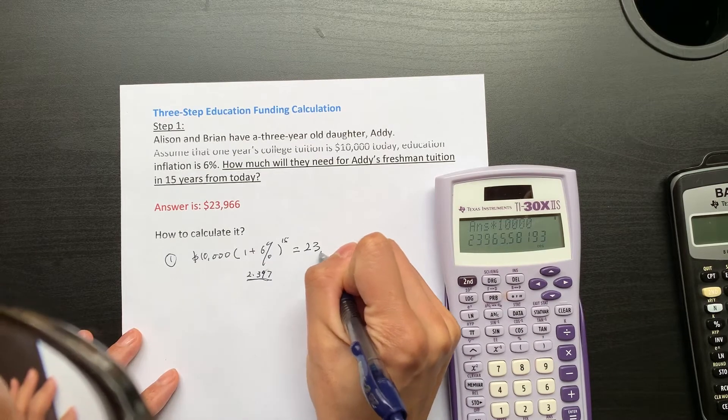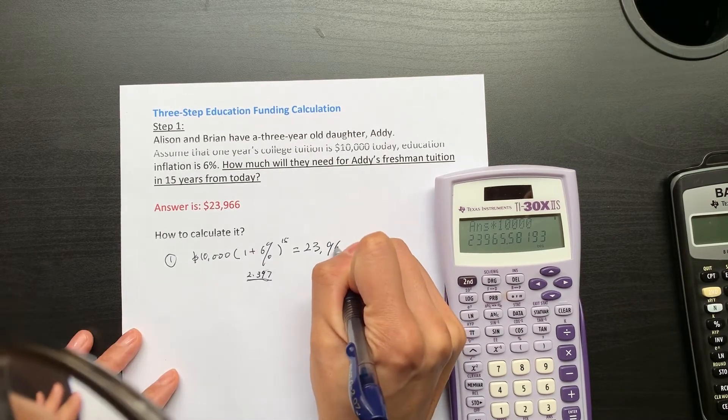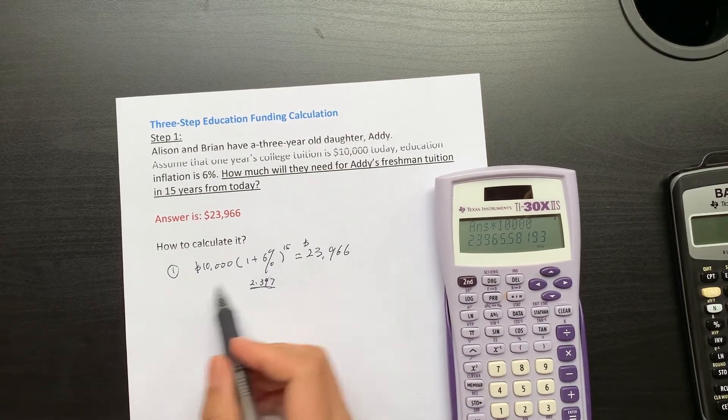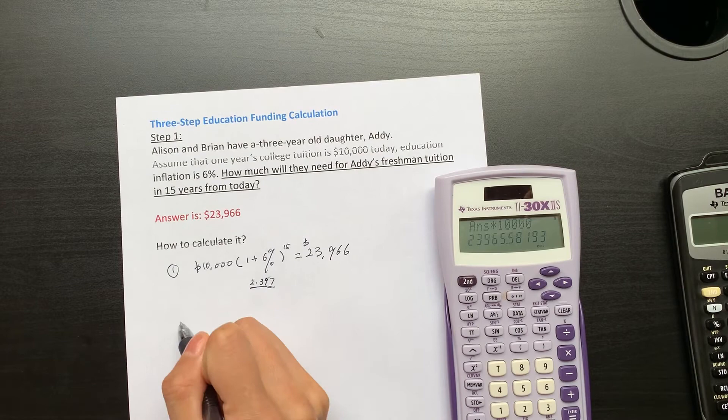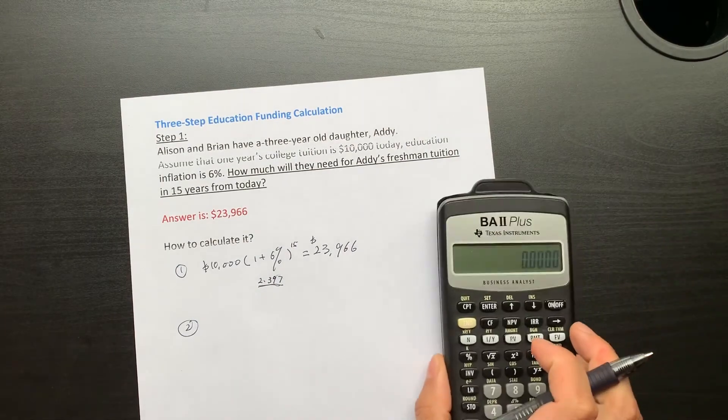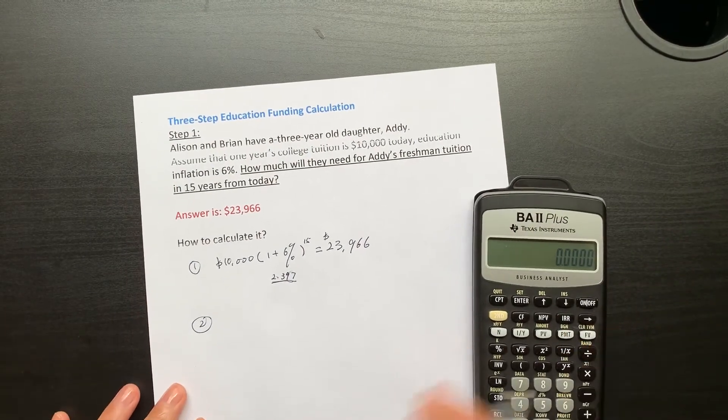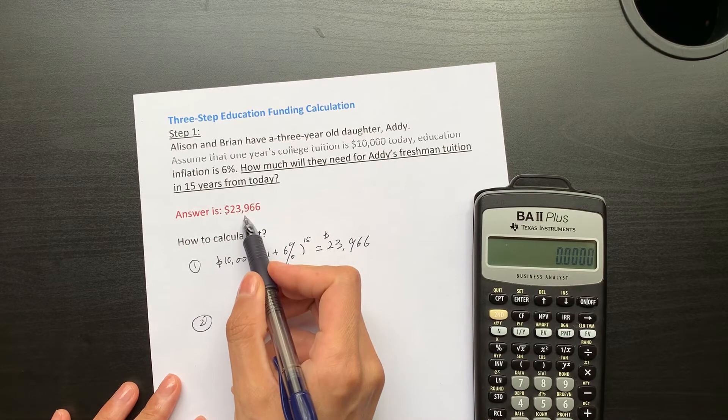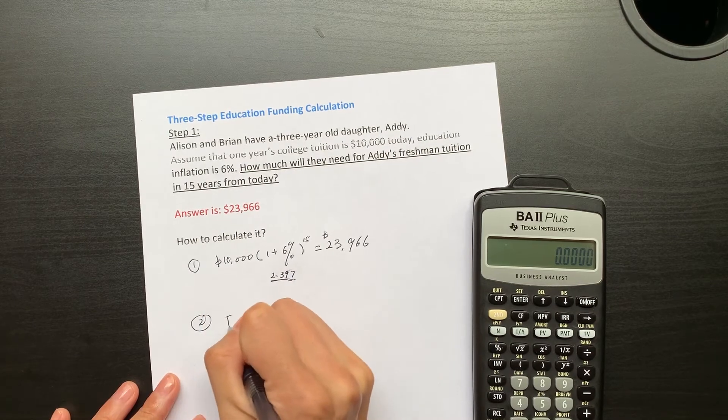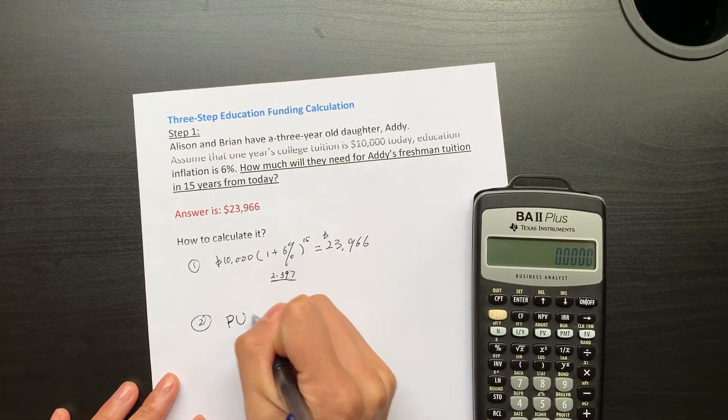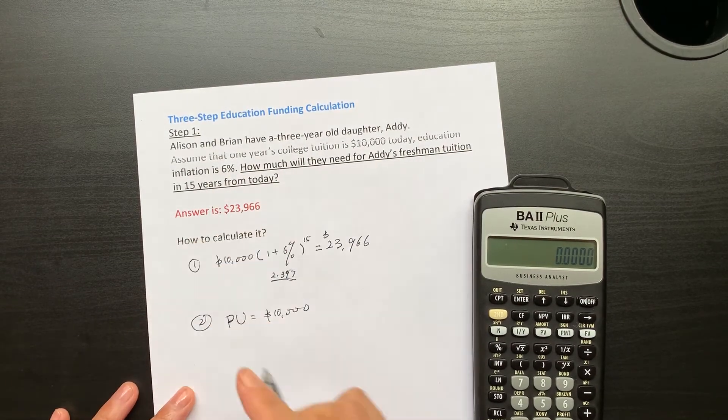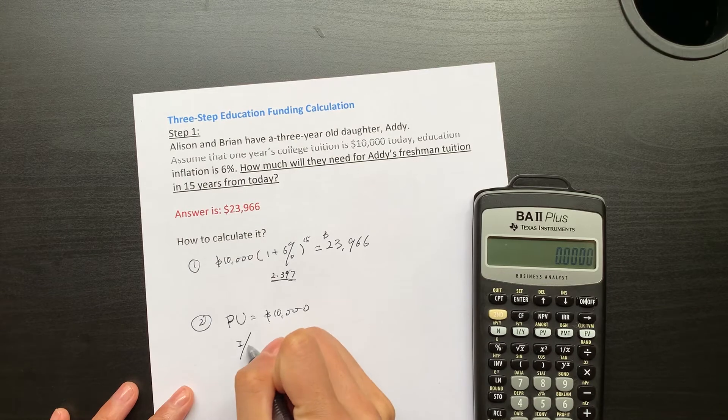So this is one way to do it with this simple function. The second way is to use the financial calculator. Basically, the present value today is $10,000.